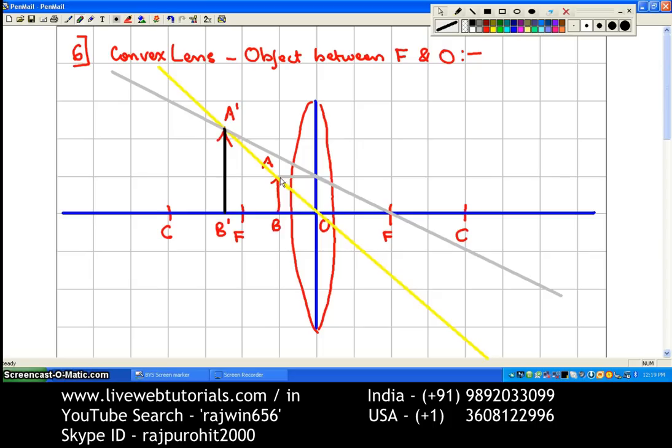Now these rays, how are they going to travel? First the grey ray over here, this is parallel to the principal axis, it is passing through F. So I will just mark the arrows of the direction in which these rays are travelling.